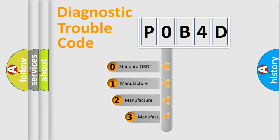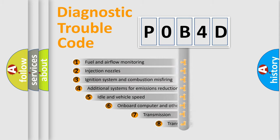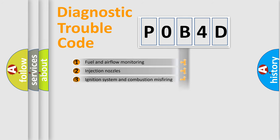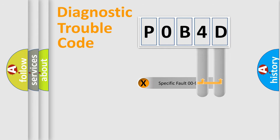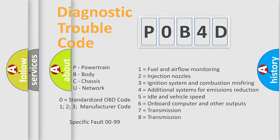If the second character is expressed as zero, it is a standardized error. In the case of numbers 1, 2, or 3, it is a more manufacturer-specific expression of the car error. The third character specifies a subset of errors. This distribution is valid only for the standardized DTC code, and only the last two characters define the specific fault of the group. Such a division is valid only if the second character code is expressed by the number 0.